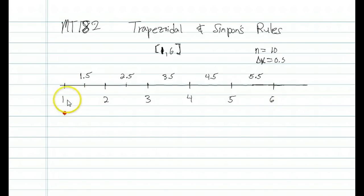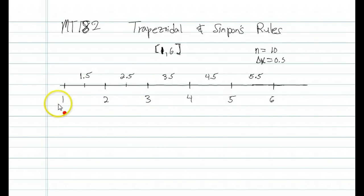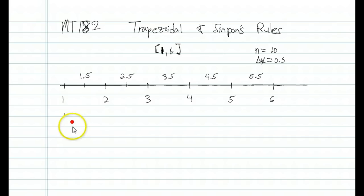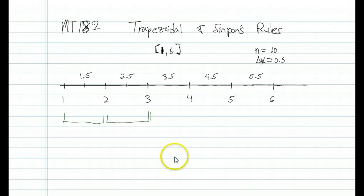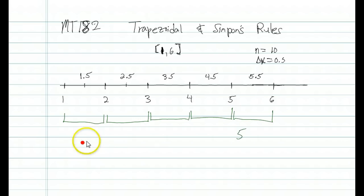All of our partition points are 1, 1.5, 2, 2.5, 3, 3.5, etc. The idea for Simpson's rule — moving from the trapezoidal rule — is we don't want to compute the function at any more partition points. But to determine a parabola you need 3 points, not 2. So the idea is to create new subintervals from our partition: instead of 10 subintervals, we look at 5 new ones by doubling the width.